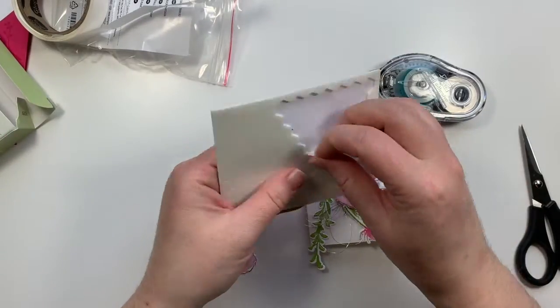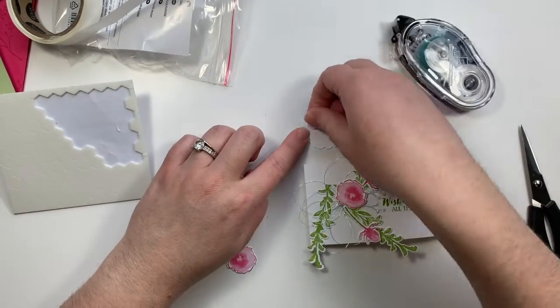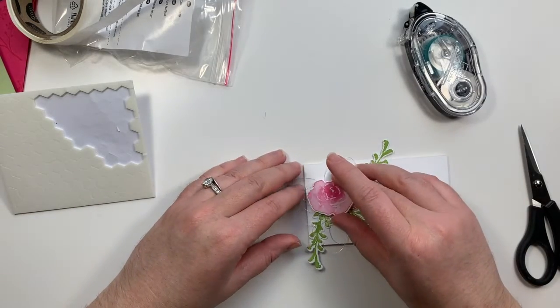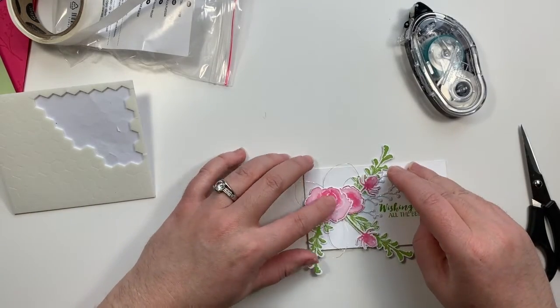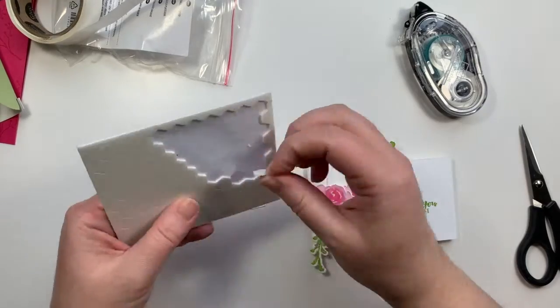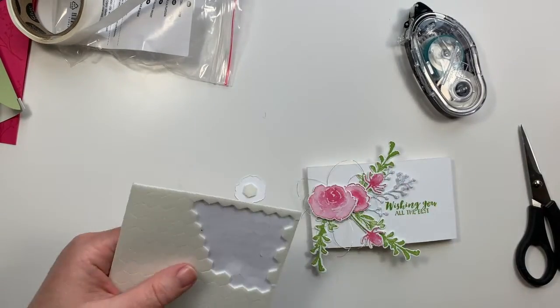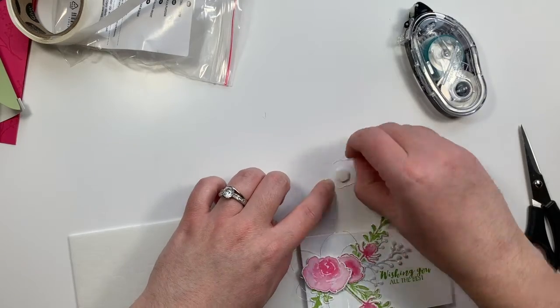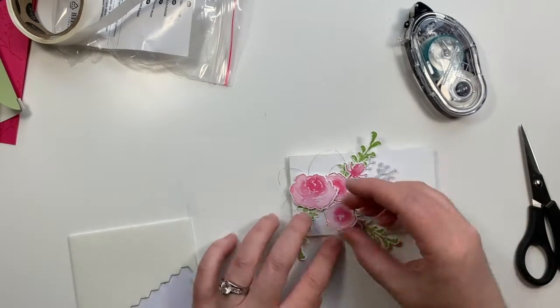So I used glue dots to put the first small flower down. I'm going to use one stampin' dimensional on the back of the larger flower. And then to really get some dimension, I'm going to pop up the last small flower with two dimensionals. And that will raise it up above everything else and just give it some really nice height.